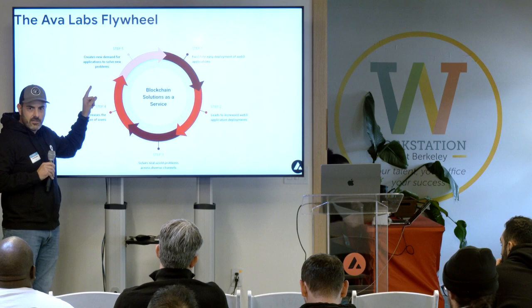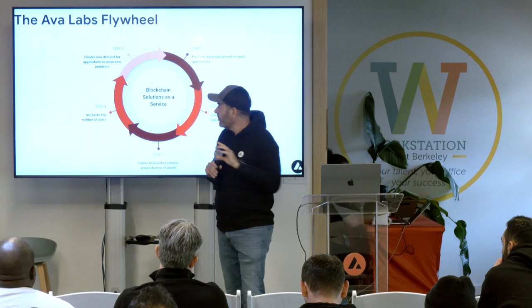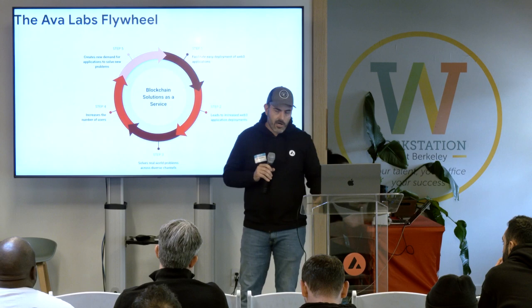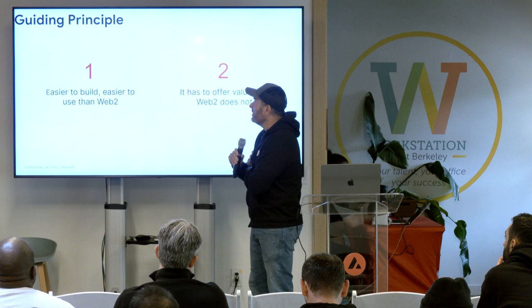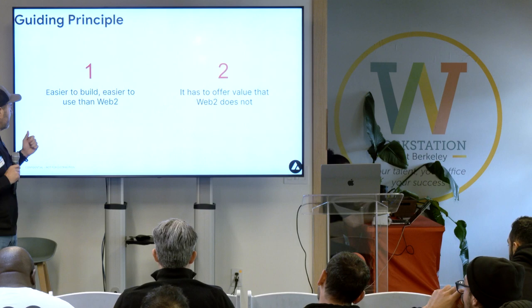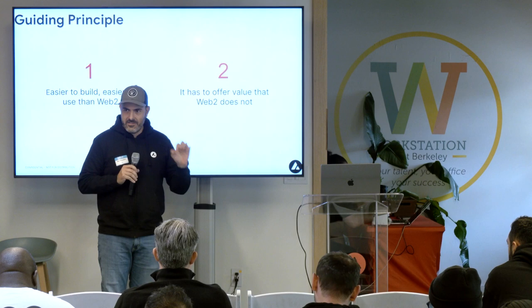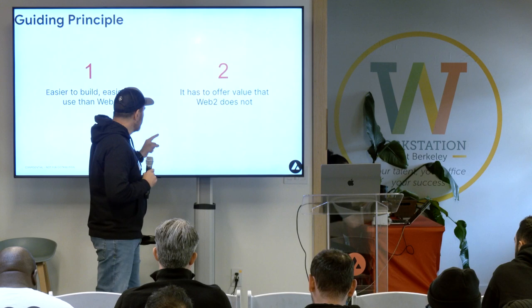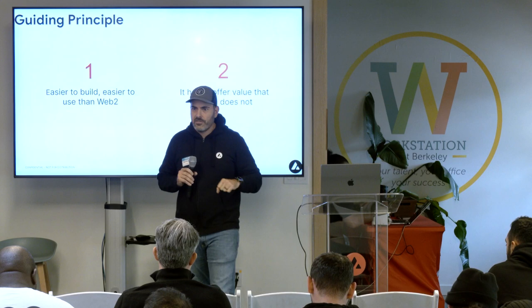And this is where we are really thinking — just how do we facilitate builder deployments on Avalanche and on subnets? Then we create some lofty guiding principles that are very hard to achieve. There are two tenants in product that we have. One: it's got to be easier to build and easier to use than Web2. Two: it has to offer value that Web2 cannot — decentralization, privacy, ownership of your own data. And ideally both.